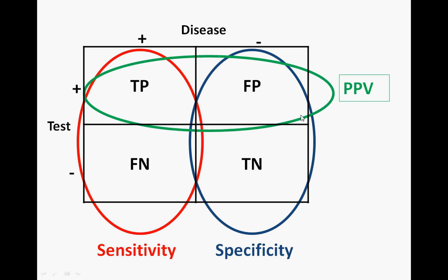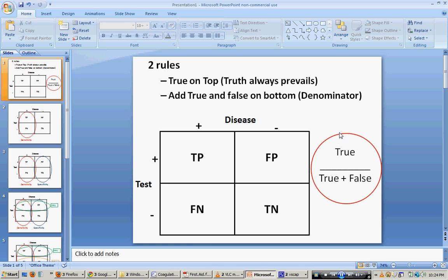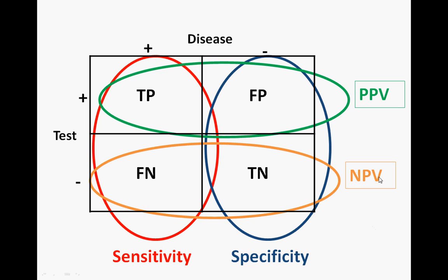Negative predictive value is the probability that a person is actually disease-free given a negative test result. For example, you get a negative HIV test — how predictive is that of truly being negative? Put a circle around the bottom two squares: true negative over false negative plus true negative. Again, the truth is in the numerator and you add the two values in the circle for the denominator.